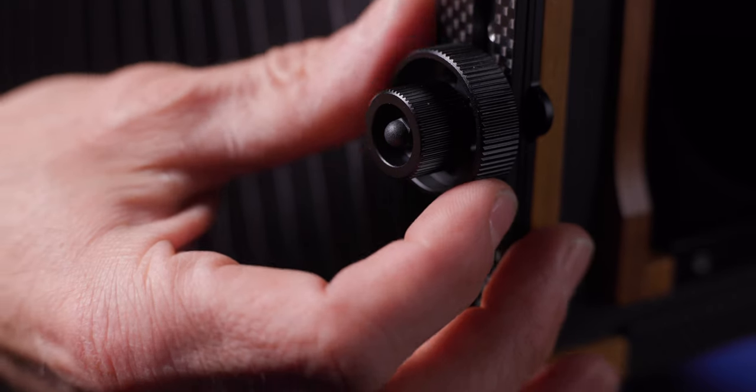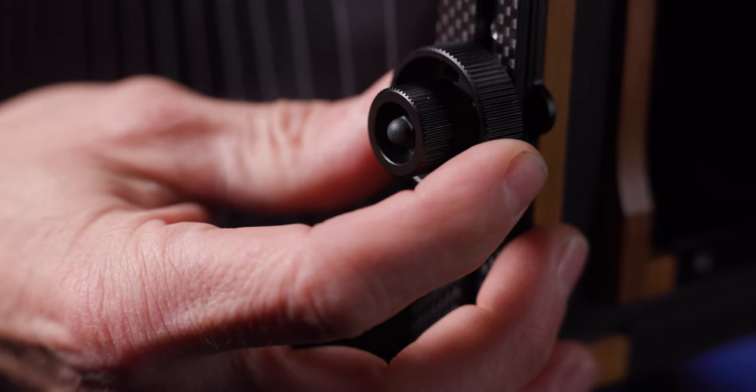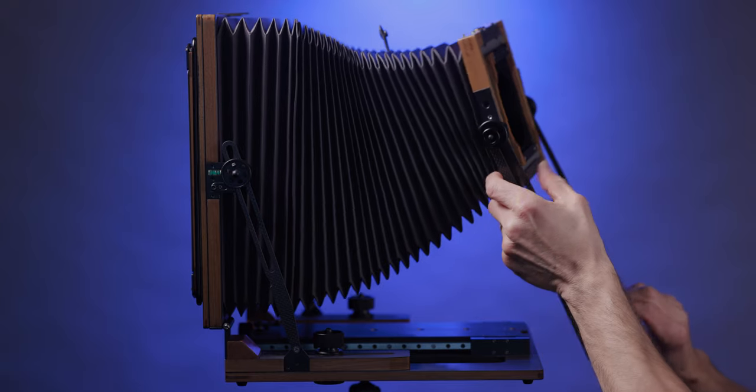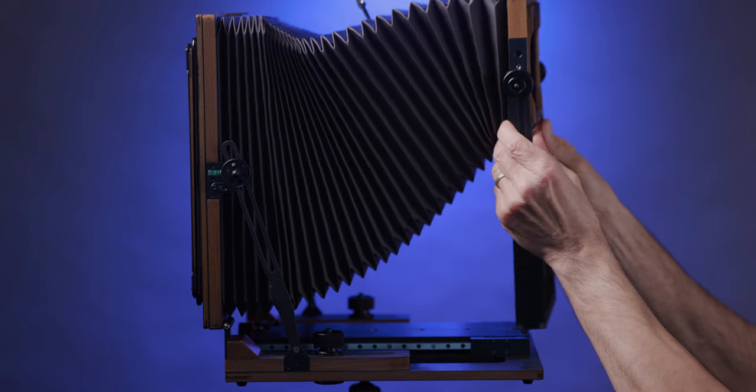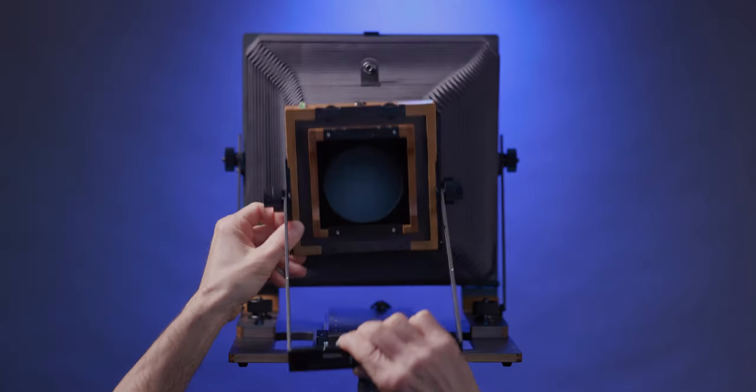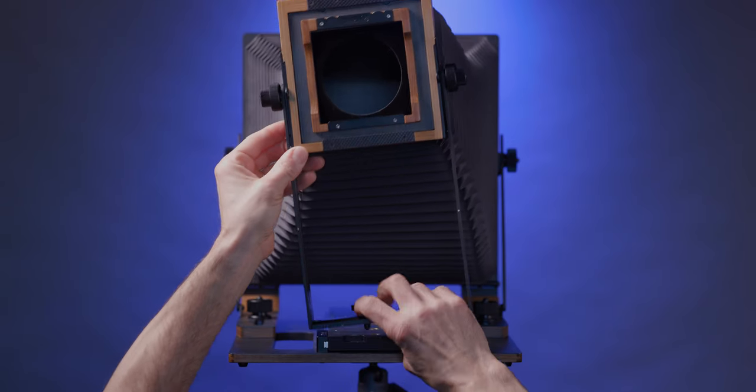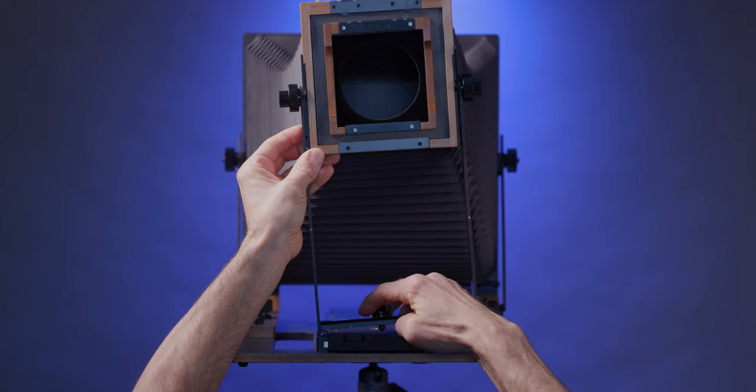To set up the front standard, you loosen the larger inner knobs and lift the standard up and slide the support towards you to the maximum extended position. Then rotate the frame for the lens holder and front standard support in opposite directions until they are upright on the same plane.